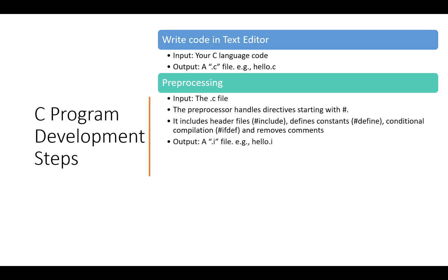The C code is then pre-processed. In the pre-processing phase, the input is the .c file and the preprocessor handles all those hash directives. For example, hash include stdio.h — during pre-processing, that header file is replaced by the actual code of that header file. Similarly, it will replace all the constants you have defined and handle conditional compilations. If there are any comments, those comments are removed. After pre-processing, the output is a .i file.